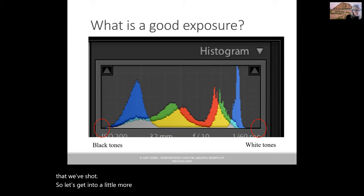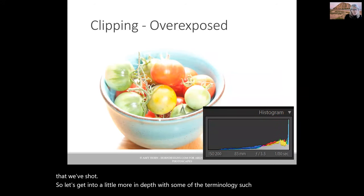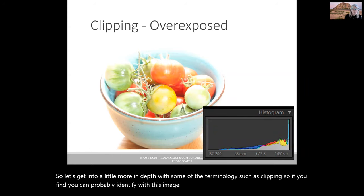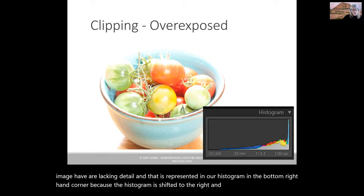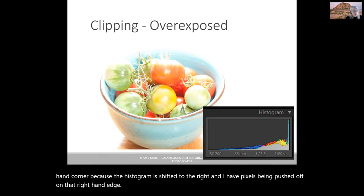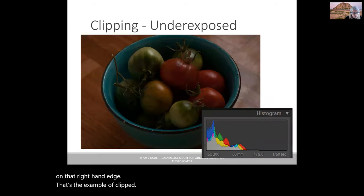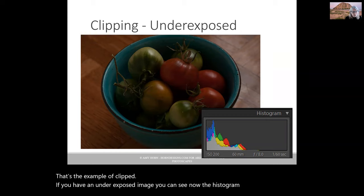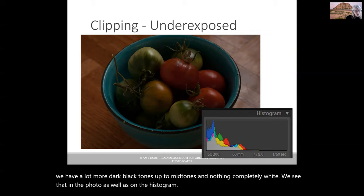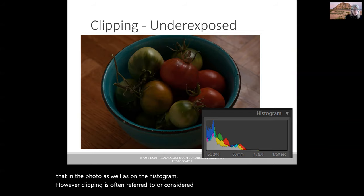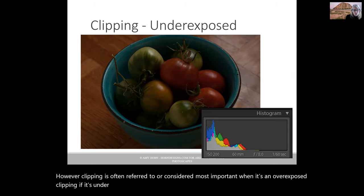Let's get into more depth with terminology such as clipping. You can probably identify that this image is overexposed. The whites in the image are lacking detail, and that is represented in our histogram in the bottom right-hand corner because the histogram is shifted to the right, and I have pixels being pushed off that right-hand edge. That's the example of clipped. If you have an underexposed image, you can see now the histogram is shifted to the left, with a lot more dark black tones up to mid-tones and nothing completely white. However, clipping is often considered most important when it's an overexposed clipping. If it's underexposed, you could just open up the shadows in software. But if it's an overexposed clip, you cannot recover the details.